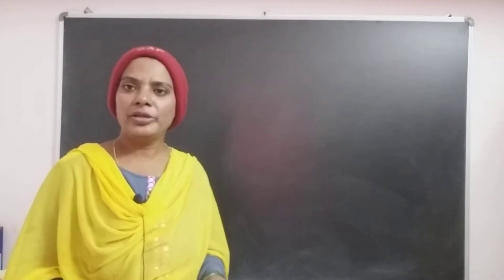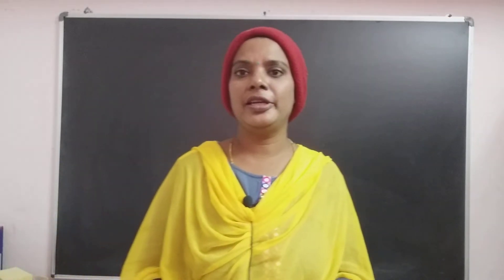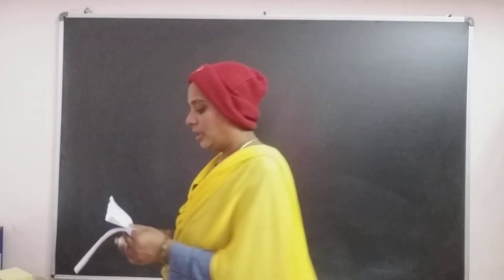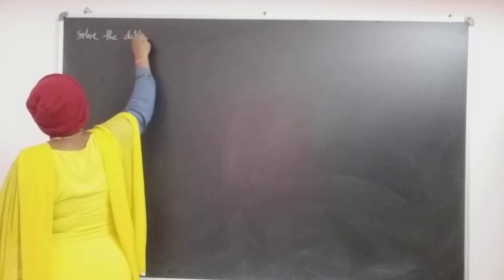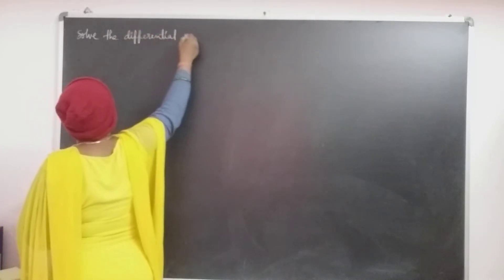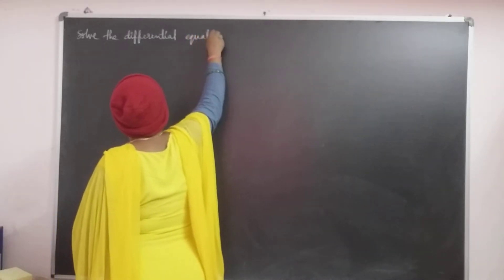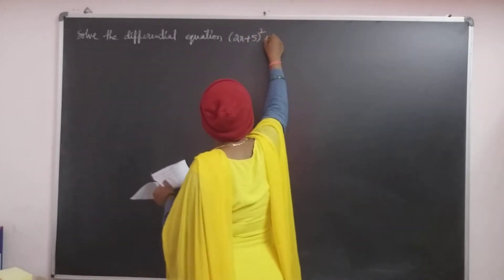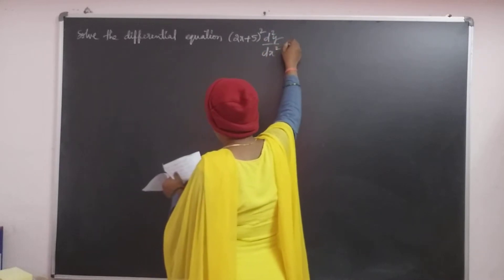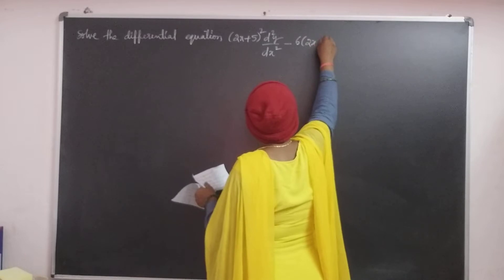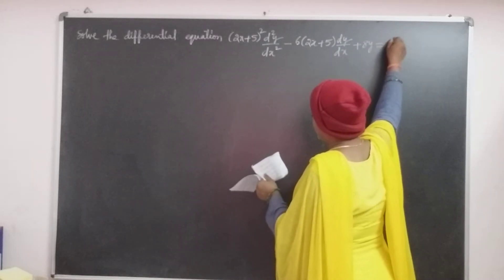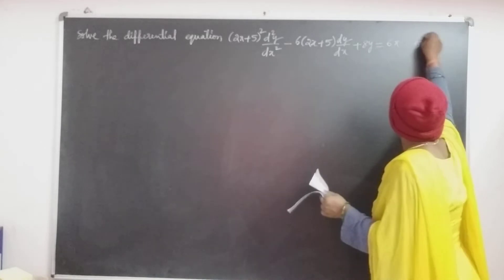Good morning everyone. Now I am going to discuss a problem on Legendre's Linear Differential Equation. The question carries 5 marks and is a repeated question. Solve the differential equation: (2x + 5)² d²y/dx² minus 6(2x + 5) dy/dx plus 8y equals 6x, carrying 5 marks.